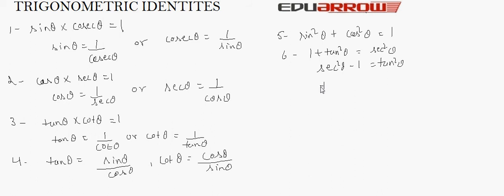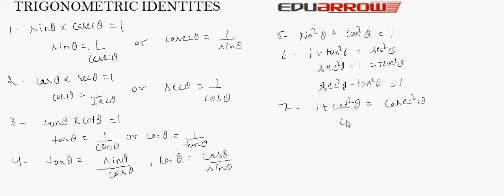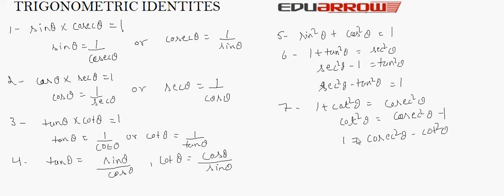From sin squared theta plus cos squared theta equals 1, we also get: 1 plus tan squared theta equals sec squared theta. This gives us sec squared theta minus 1 equals tan squared theta, or sec squared theta minus tan squared theta equals 1. Similarly, 1 plus cot squared theta equals cosec squared theta, which gives cot squared theta equals cosec squared theta minus 1, and cosec squared theta minus cot squared theta equals 1. These are the fundamental identities we follow in trigonometry.